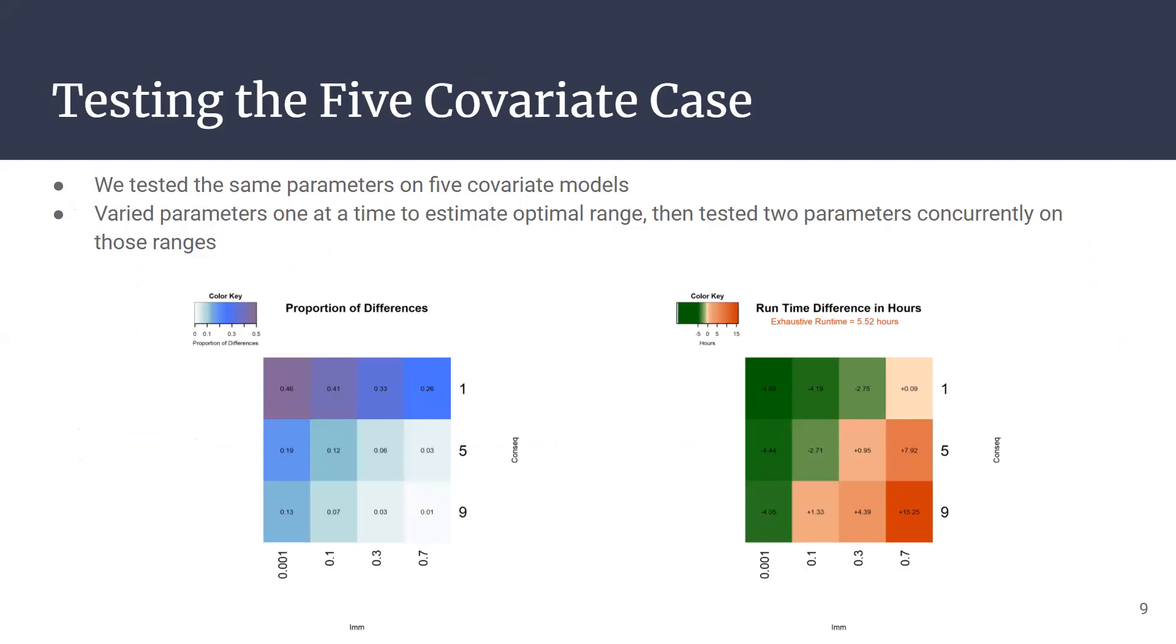Then we continued on by testing parameters two at a time using those ranges that we found from varying parameters one at a time. Here we can see there's immigration on the x-axis and consecutive on the y-axis. This is an example of varying those parameters two at a time.